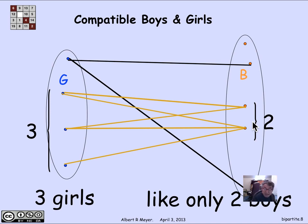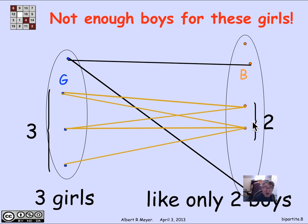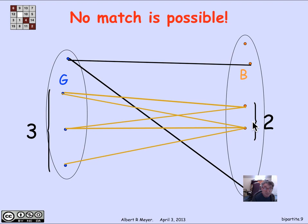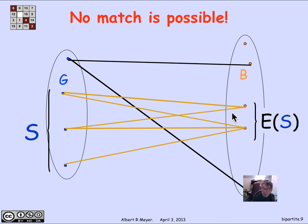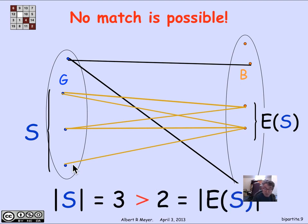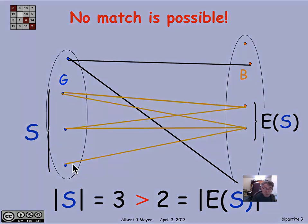We have three girls, and collectively they only like two boys — there just are not enough boys to go around for these girls. That proves that a match is not going to be possible. More generally, if you have a set S of girls on the left and you look at the image of S under the edge relation, E(S) — which is collectively the set of all boys compatible with one or more of the girls in S — then when S is greater than E(S), we are bottlenecked and we can't possibly find a match.